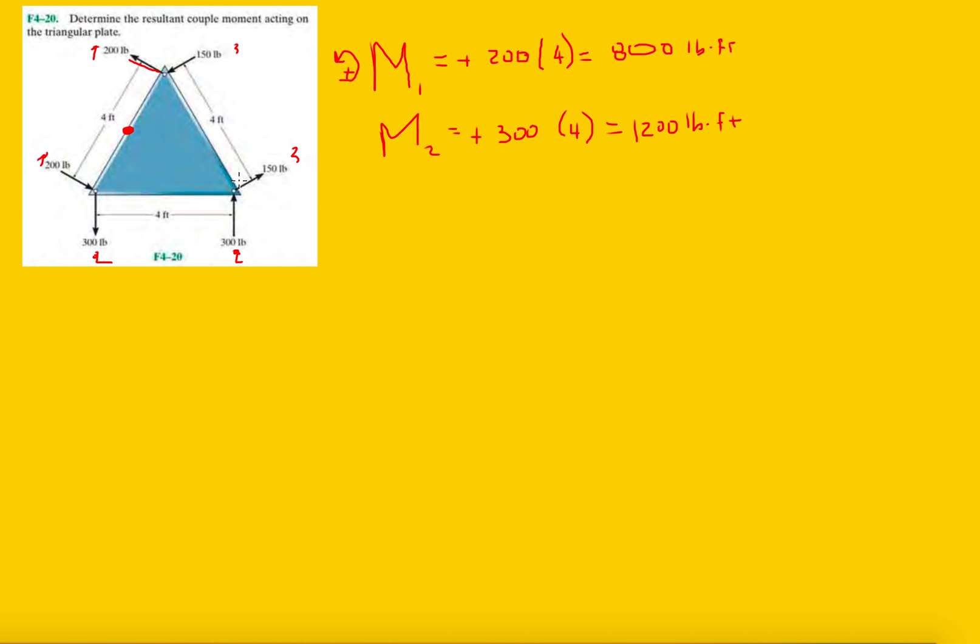Last but not least, M3: it's 150, distance between them is 4, and these are going counterclockwise. So this is 600 pound-feet.